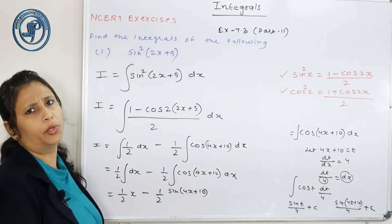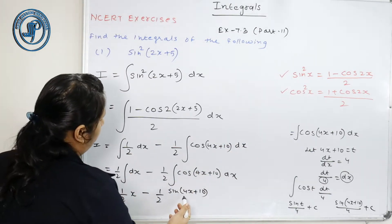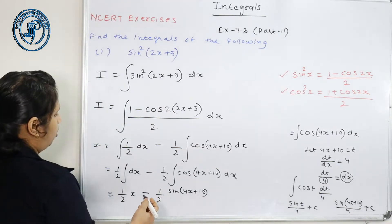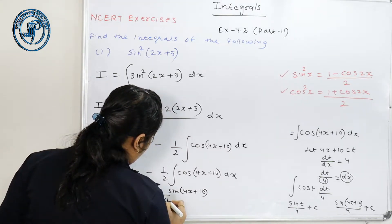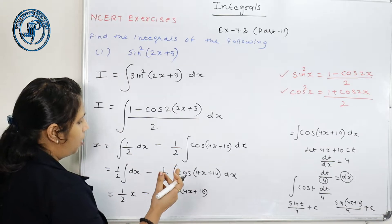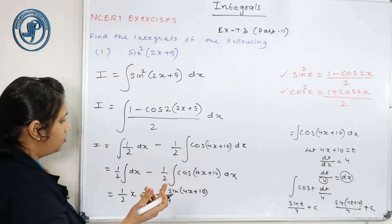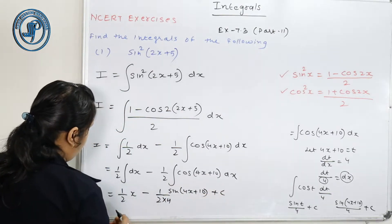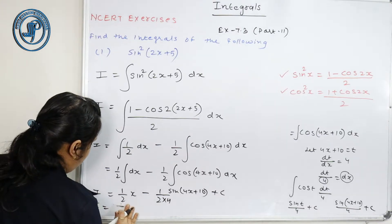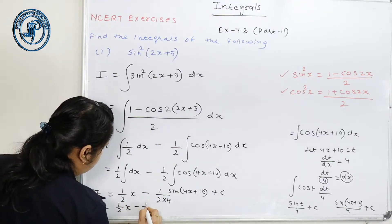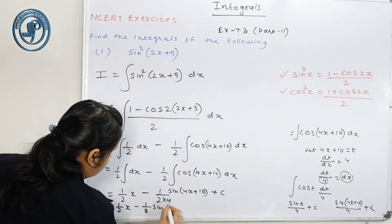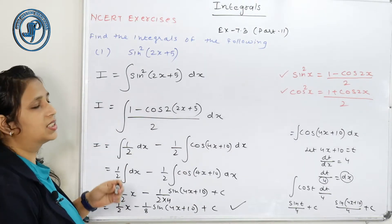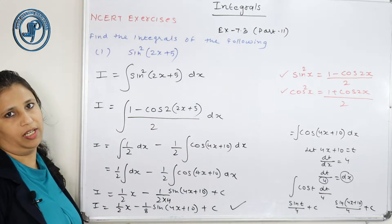You don't need to do that long process in every question. You can directly divide by the derivative here. 4x+10 का differentiation 4 है, so divide by 4. Final answer: 1/2 · x − 1/8 · sin(4x+10) + C. So यह मेरा answer हो गया sin²(2x+5) dx का।